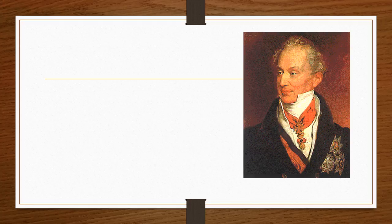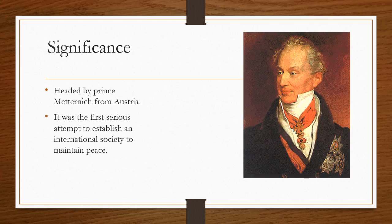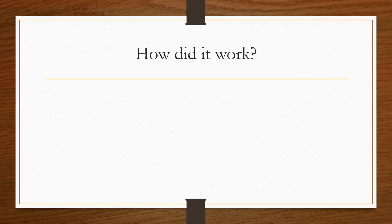Its main personality, its main character, was Prince Metternich from Austria. This system of alliances was the first serious attempt to establish a kind of international society to maintain peace. Some people see something similar to the League of Nations or the United Nations in the aims of the Concert of Europe and its Congresses.